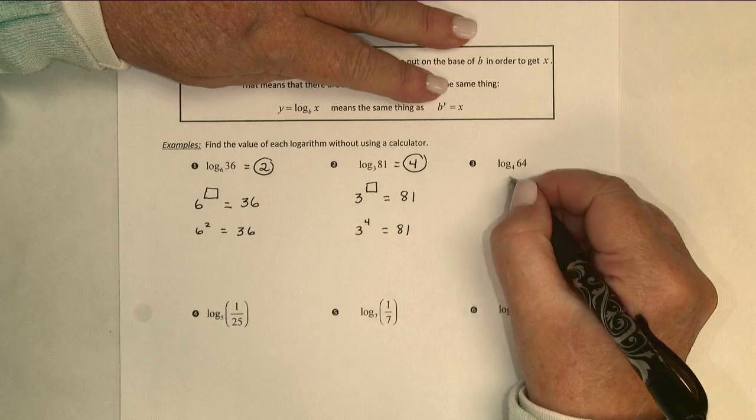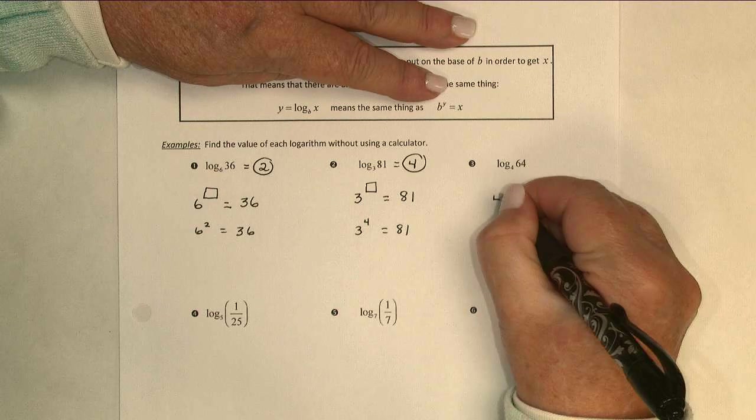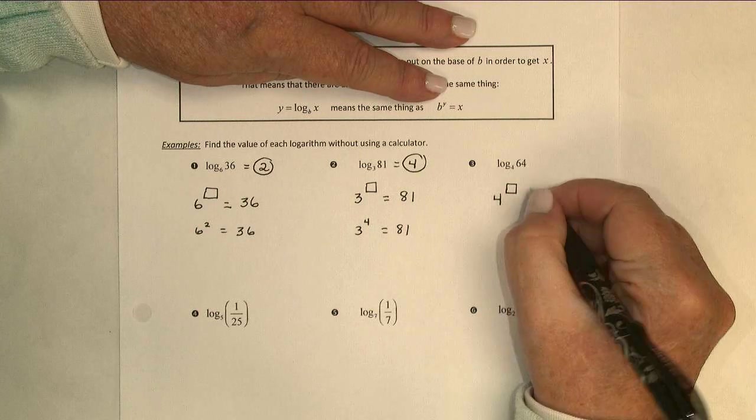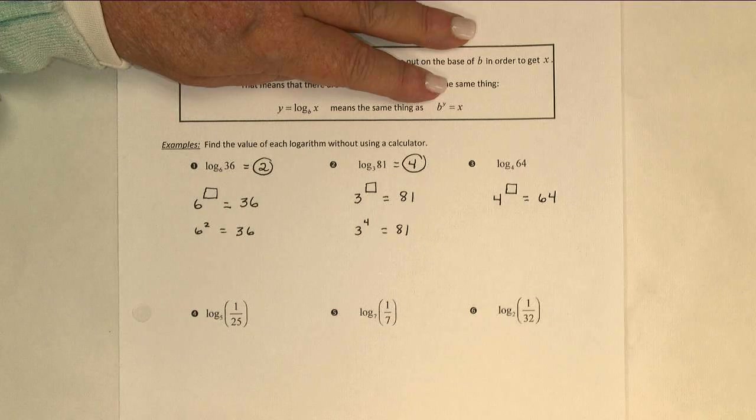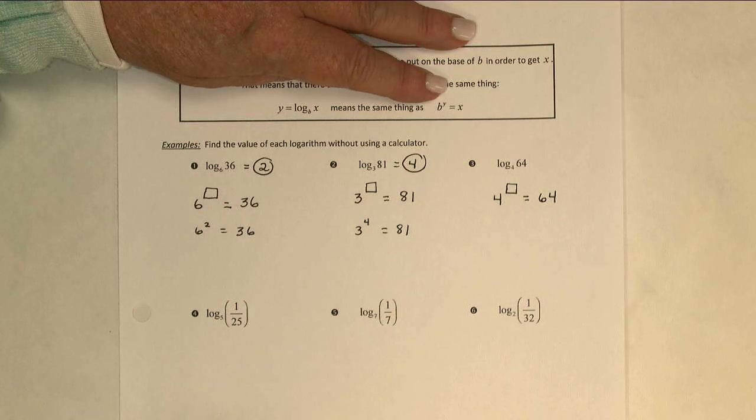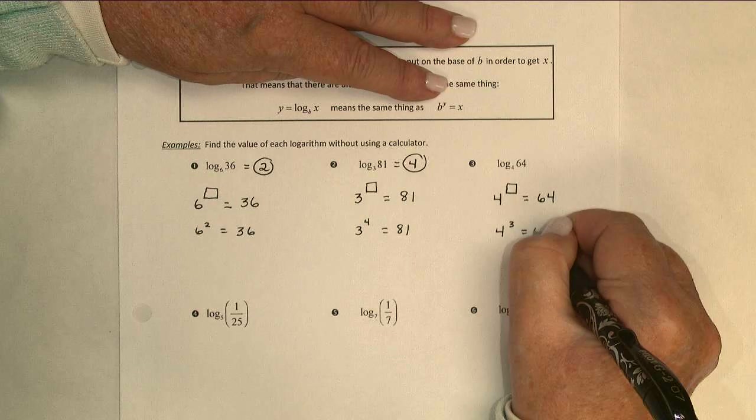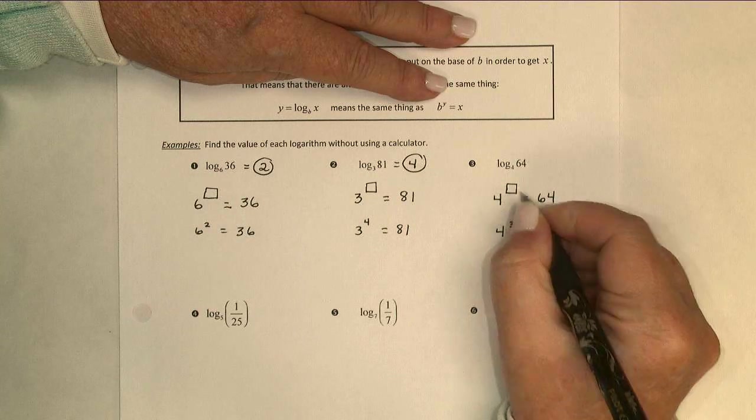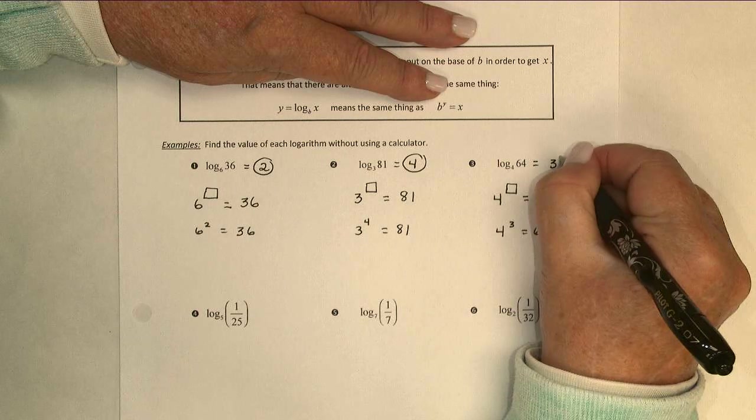Log base 4 of 64. Base is 4. I want to know what exponent I need to get to 64. It's the exponential statement of the same thing. Since I know that 4 cubed is 64, that missing exponent is 3. And the value of the logarithm is 3.